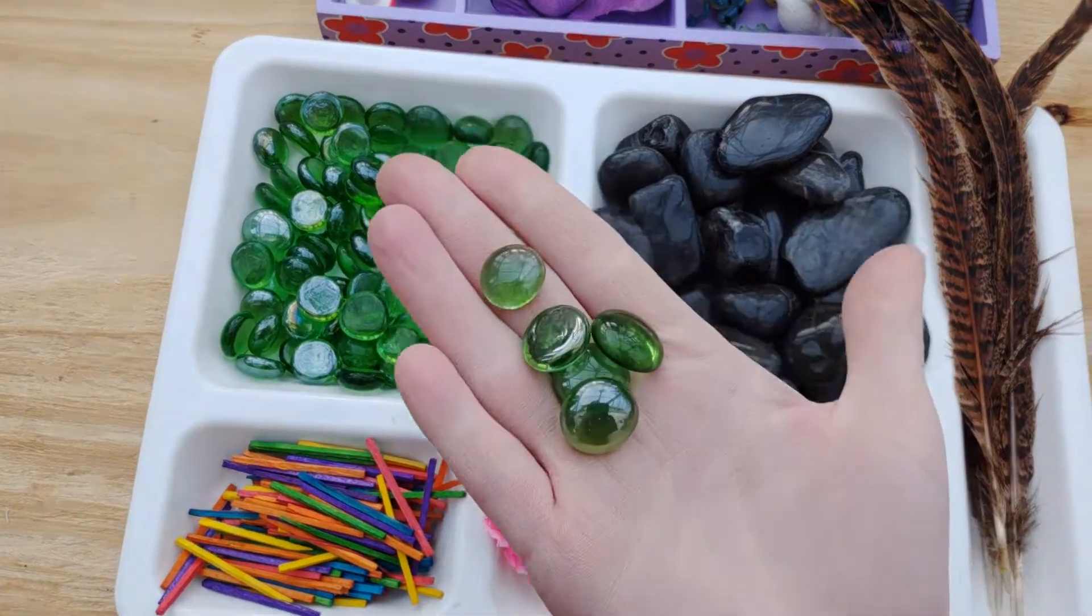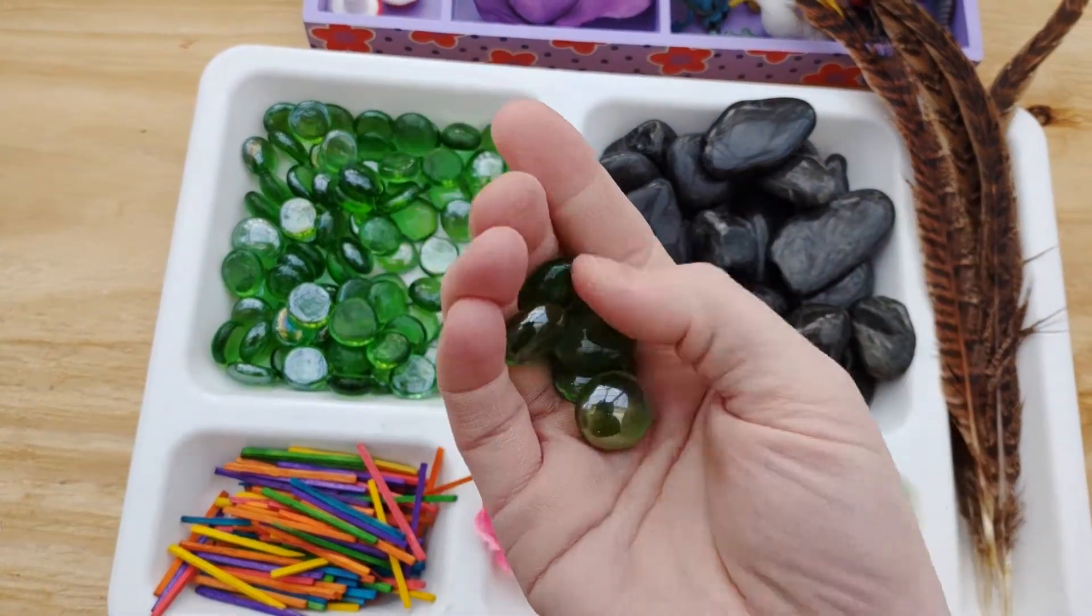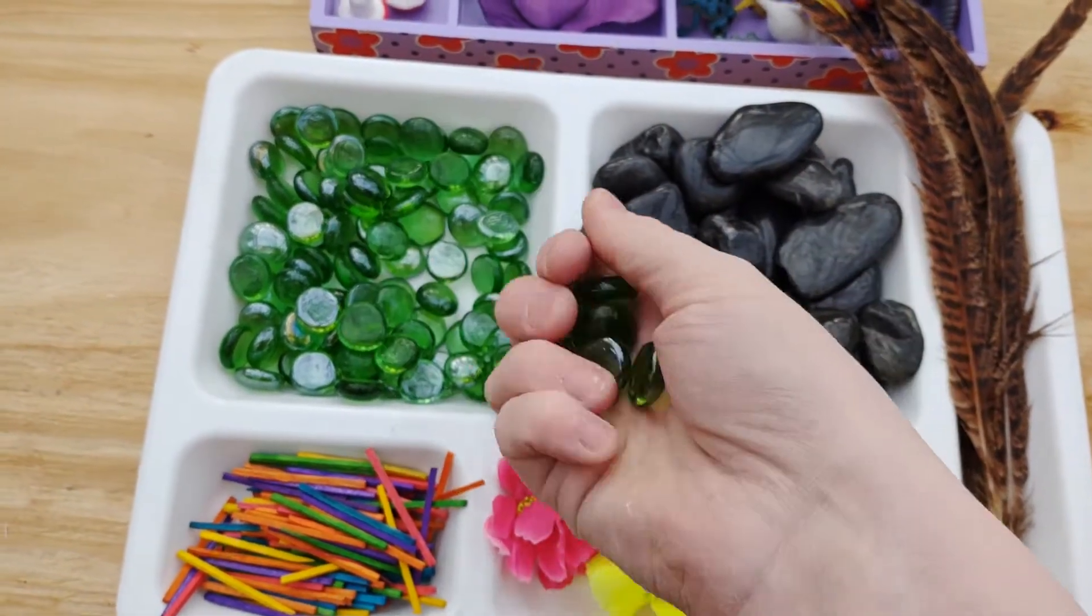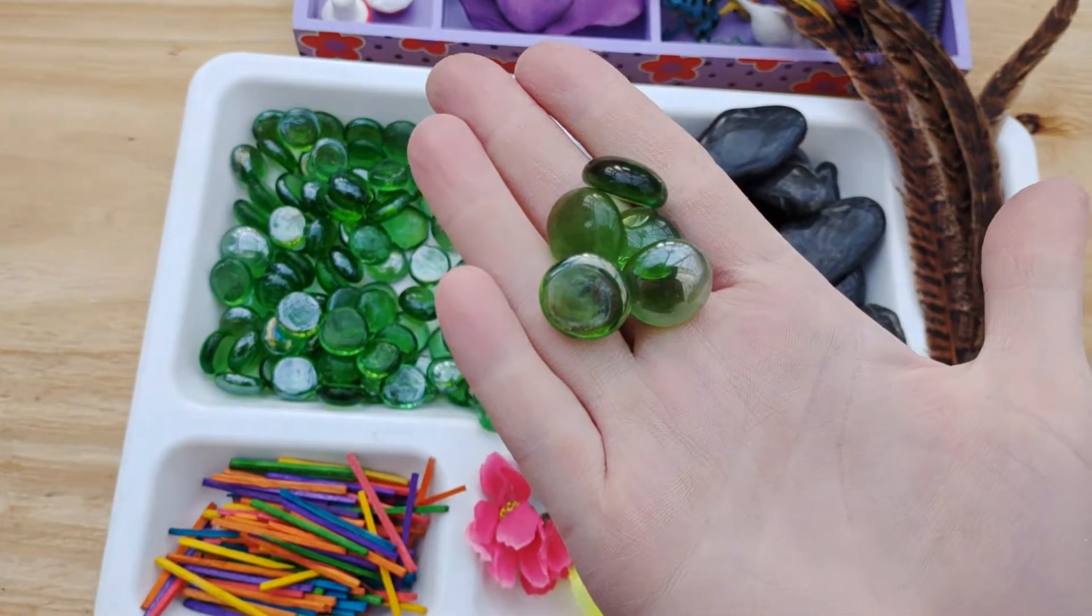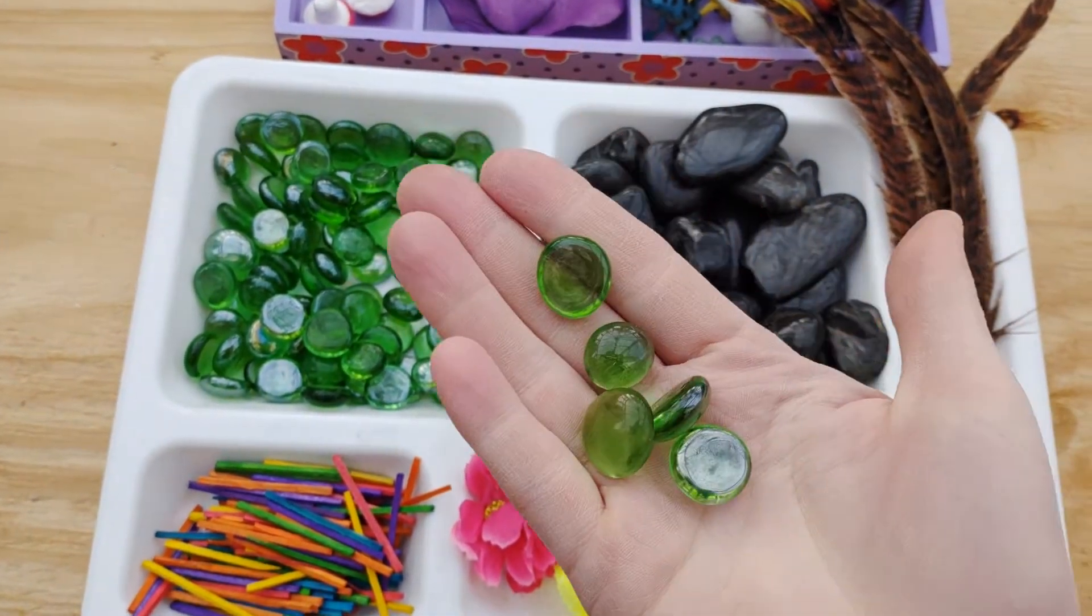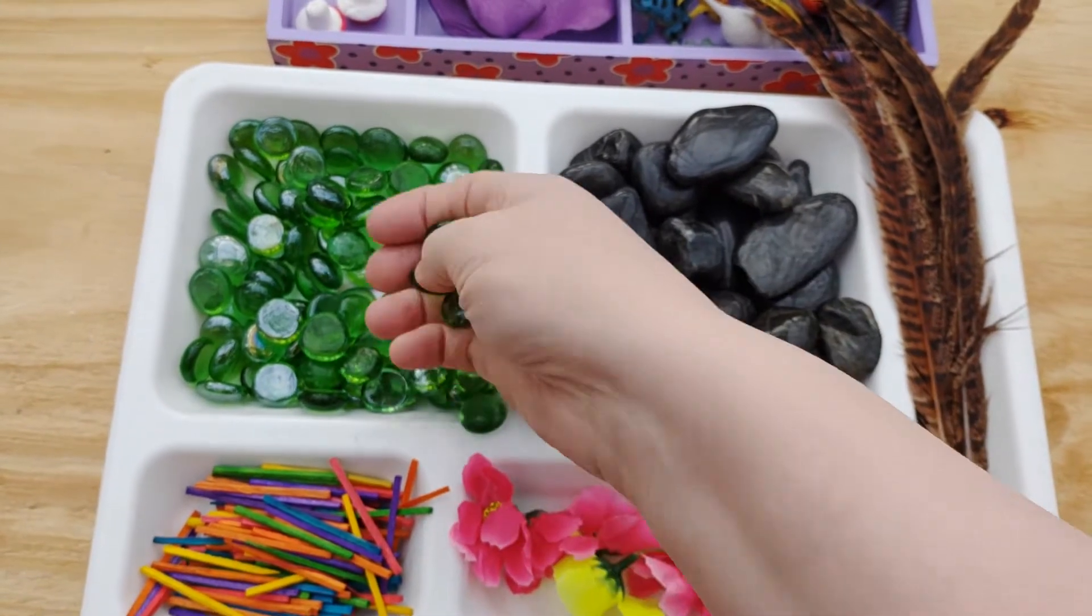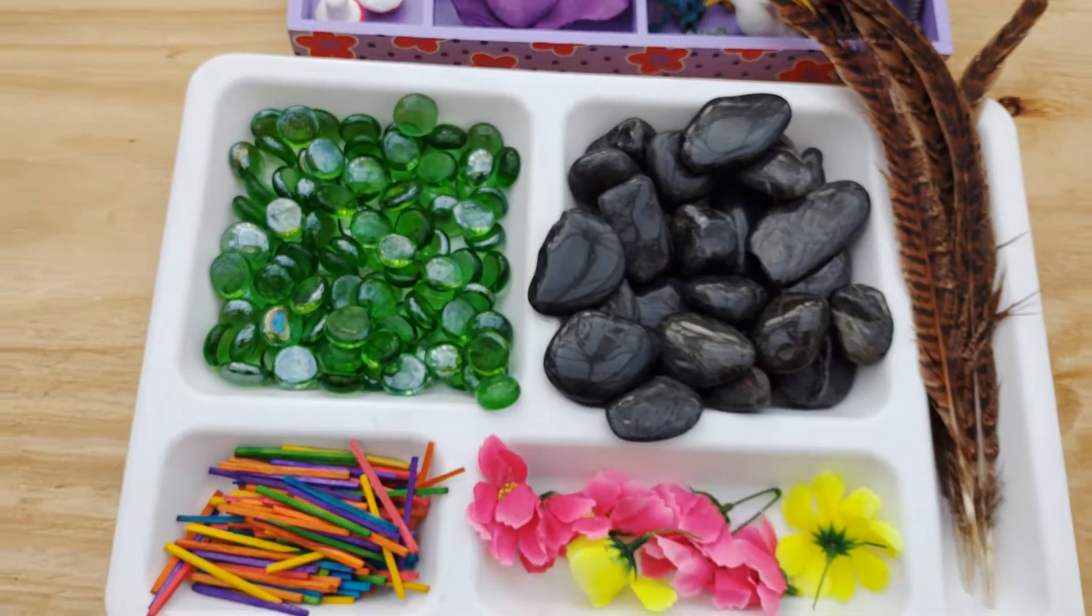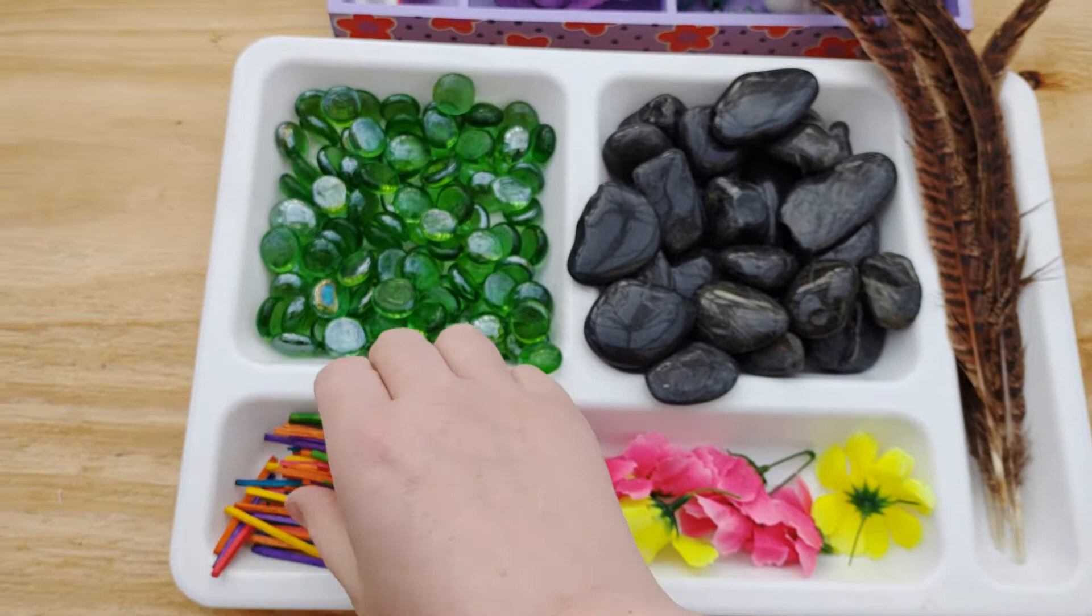Stones, pretty decorative stones. B&M decorative aisle about £1.99 for a jar. Obviously very chokeable. Our particular loose parts wouldn't be good for any children that mouth. So just be our older four using these.